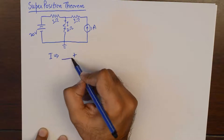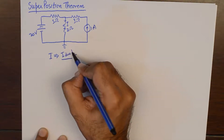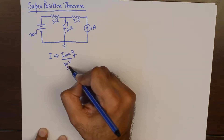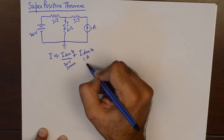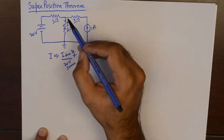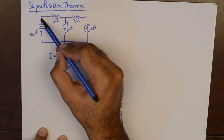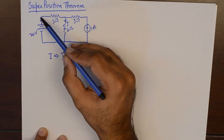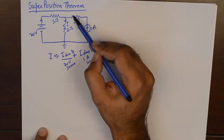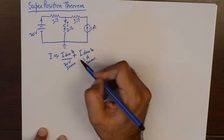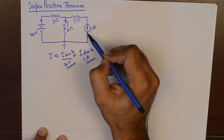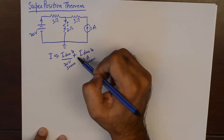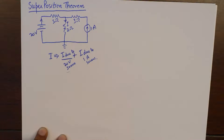The current from this voltage source will flow in one direction and the current from this current source will also flow in the same direction, so they will add up — that clarifies the algebraic part of the statement. Had this current source been in the opposite direction, we would subtract these two currents because it is an algebraic sum.